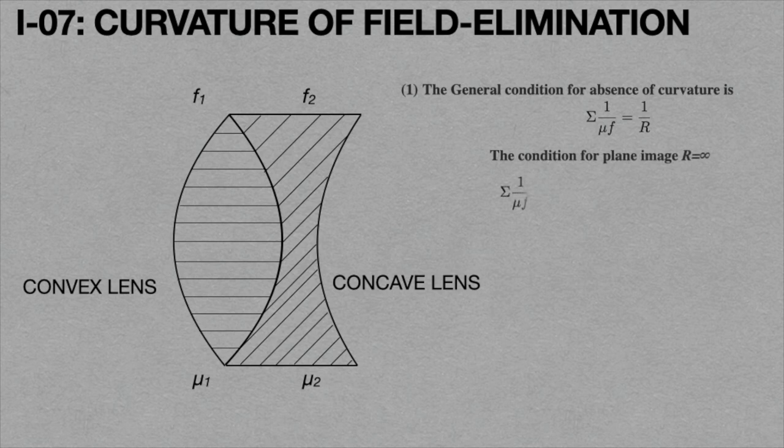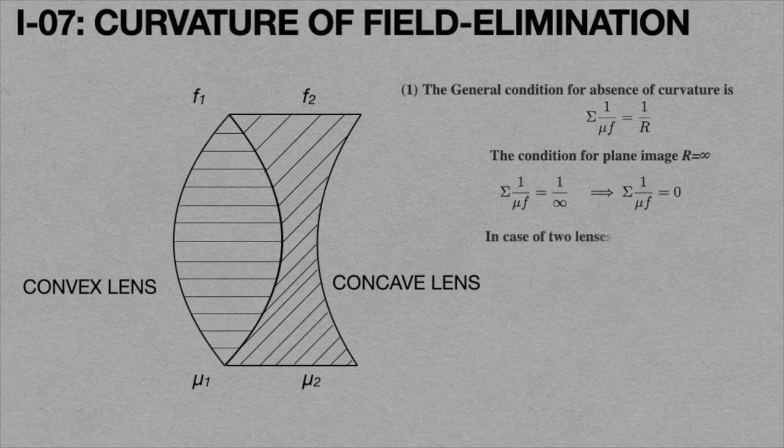Hence, sigma 1 by mu F equals 1 by infinity, which implies sigma 1 by mu F equals 0, because anything by infinity is always 0. Here two lenses are there. Therefore, 1 by mu1 F1 plus 1 by mu2 F2 equals 0.